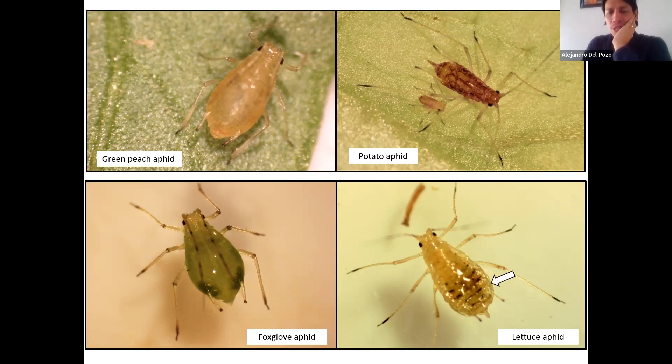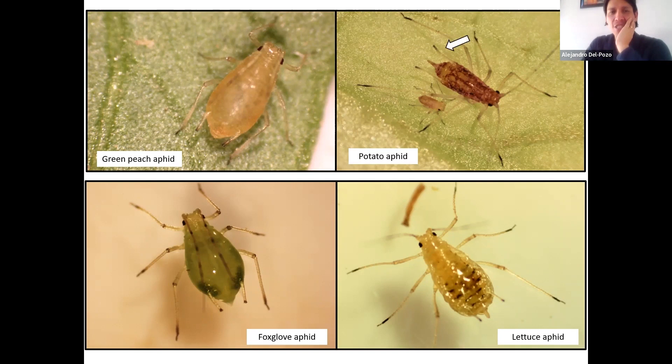I forgot about the animation — apologies. The animation shows the arrows highlighting: the enlarged head base for green peach aphid, the long cornicles for potato aphid, the dark patches for foxglove aphid, and the dark ribs for lettuce aphid.